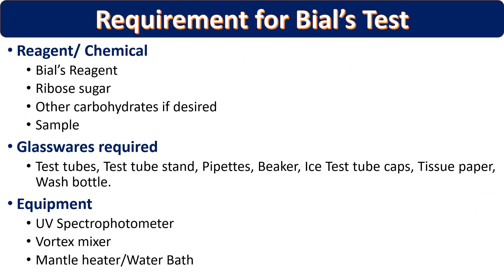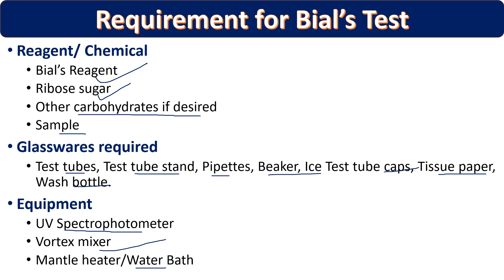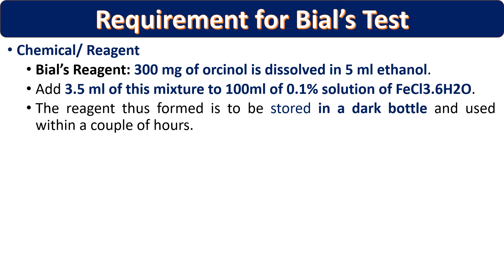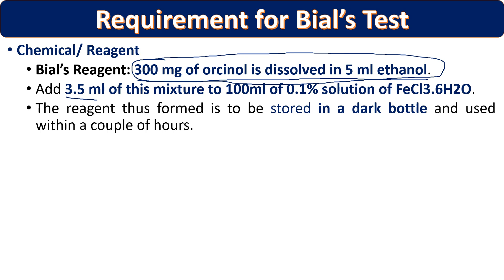To perform this test we require: Bial's reagent, a sample (ribose sugar or other carbohydrates), glassware including test tubes, test tube stand, pipettes, beakers, tissue paper, and wash bottles. Equipment needed includes a vortex mixer, water bath for heating, and for quantification a photometer. For reagent preparation: Bial's reagent contains 300 mg of orcinol dissolved in 5 ml of ethanol. From this, 3.5 ml is taken and made up to 100 ml with 0.1% ferric chloride solution.